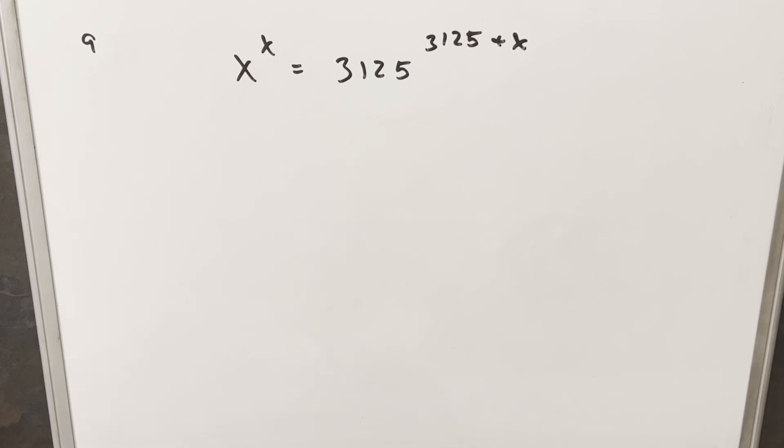Hey, we have here another exponential problem on the board. We have x to the x equals 3125 to the 3125 plus x.